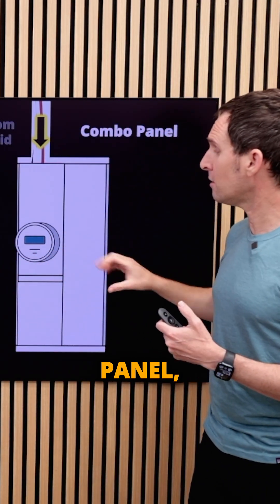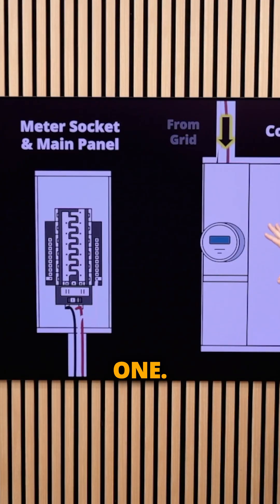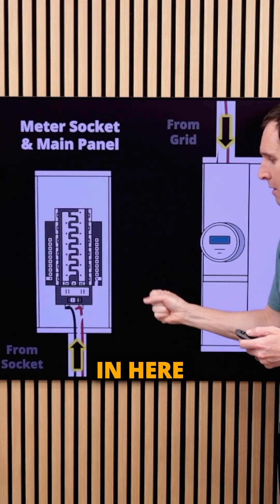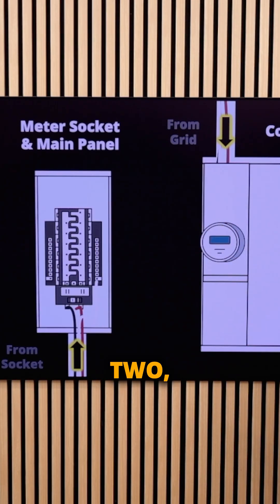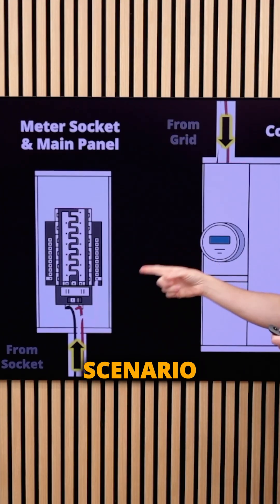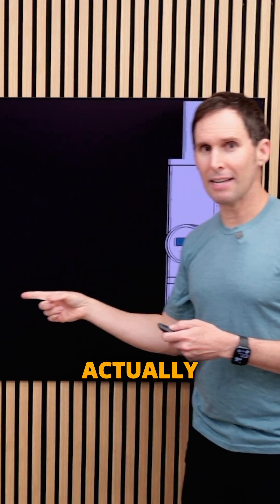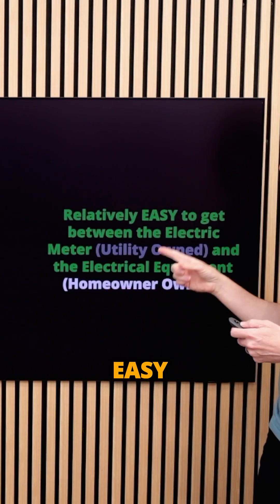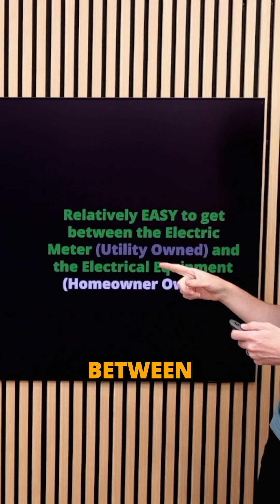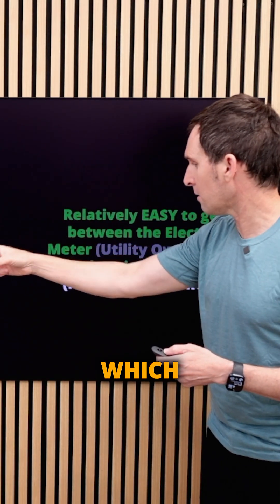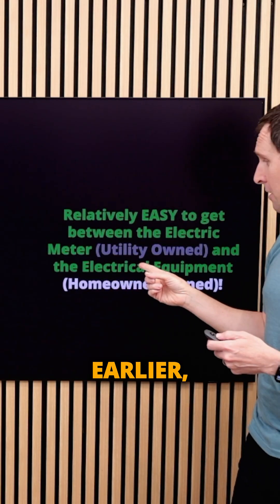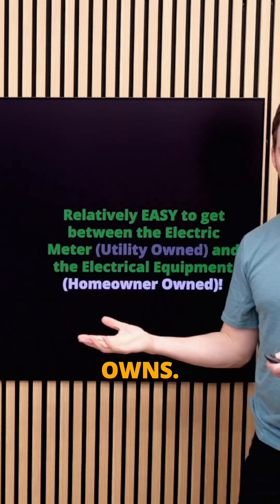In this combination panel, everything is all in one. If you see the difference between these two, you can imagine in this scenario it's actually relatively easy to get between the electrical meter, which the utility owns as I mentioned, and the electrical equipment, which the homeowner owns.